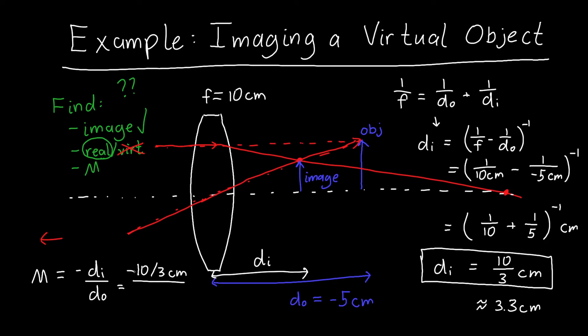So we can plug in di, which we have here, so this is 10 over 3 centimeters, and it's negative because there's a negative sign out front, divided by do, which was negative 5 centimeters. The centimeters will cancel and the negative signs will cancel, and this will end up being equal to two-thirds.